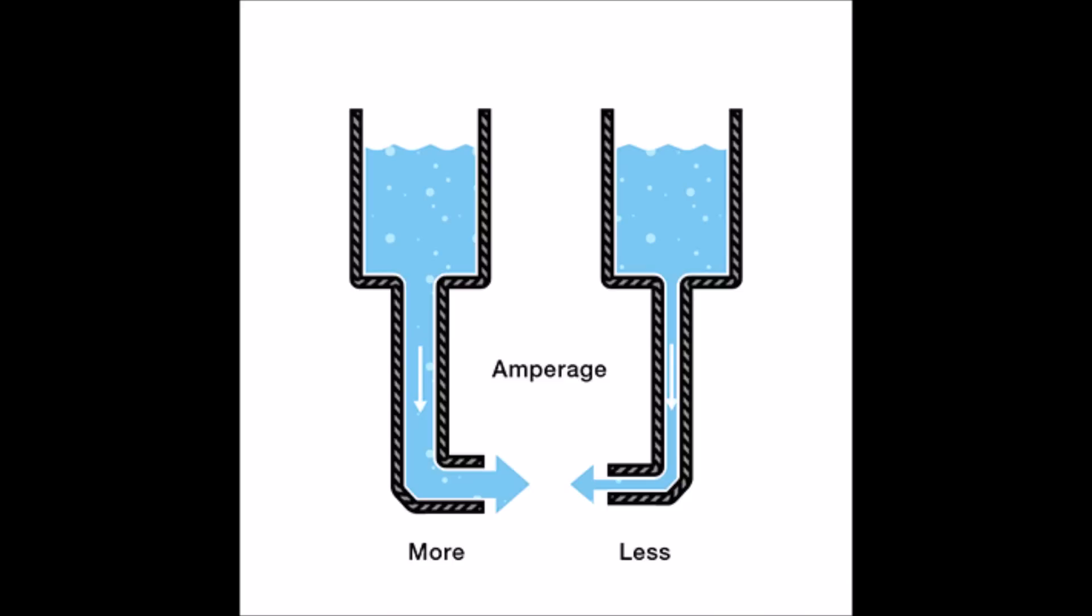So to understand a little bit more about current, let's go back to the illustration of the pipes with the water reservoir, where you've got the water above the reservoir, gravity is pulling down on the water, creating the pressure or the voltage. And then the amperage is the flow through the pipe. So in this example that you see here, the amperage on the left is greater because the pipe is a little bit bigger and can flow more water.